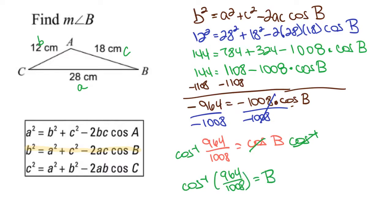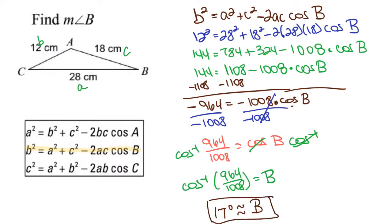I'll put this into my calculator, making sure I'm in degree mode since I'm working in degrees. I do second cosine — the inverse — of negative 964 divided by 1,008 and hit enter. I get B equals approximately 16.99, so angle B is approximately 17 degrees.